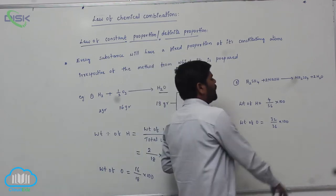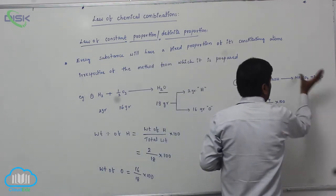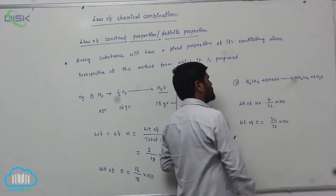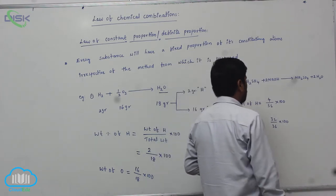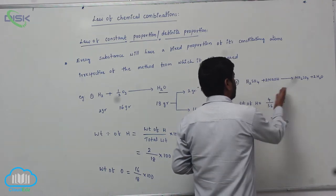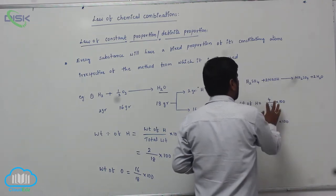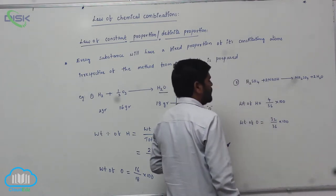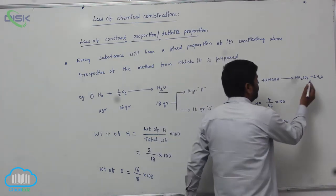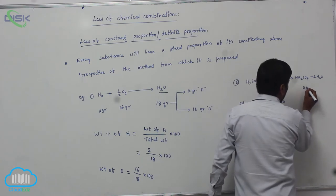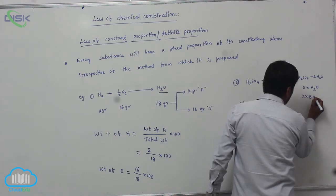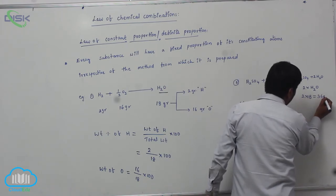So therefore, here 2 moles of water is formed. So therefore, weight of hydrogen equals to 4 grams. Therefore, 4 by 36 means here 2 into H2O means 2 into 18. So therefore, 36 grams.